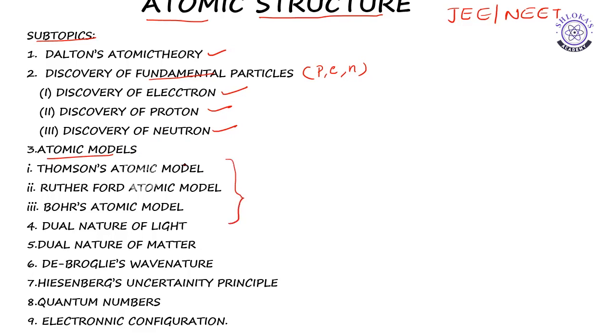After the discovery of these fundamental particles, the arrangement of these three fundamental particles within the atoms, which is nothing but atomic models. In this atomic model we have three atomic models very important: Thomson's atomic model, Rutherford, and Bohr's atomic model. Then dual nature of the light, and here we will discuss quantum theory of radiation or Planck's quantum theory and photoelectric effect also under dual nature of light. In a similar way we also discuss about dual nature of matter, then de Broglie's wave equation or wave nature, Heisenberg uncertainty principle, quantum numbers, and electronic configuration.